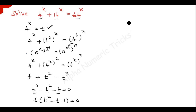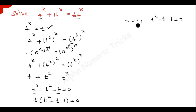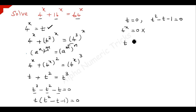Since the product equals zero, either t equals 0 or t squared minus t minus 1 equals 0. If t equals 0, then 4 to the power x equals 0, which is not at all possible. So the only possibility is t squared minus t minus 1 equals 0.